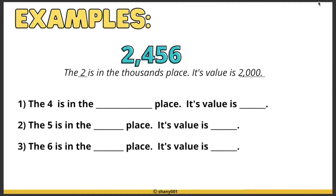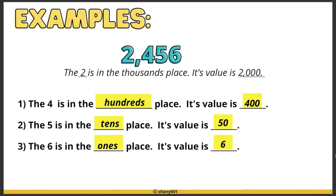Let's look at the number 2,456. The 2 is in the thousands place, so its value is 2,000. Can you figure out the place and value of 4, 5, and 6? The answers: the 4 is in the hundreds place and its value is 400. The 5 is in the tens place and its value is 50. The 6 is in the ones place and its value is 6.